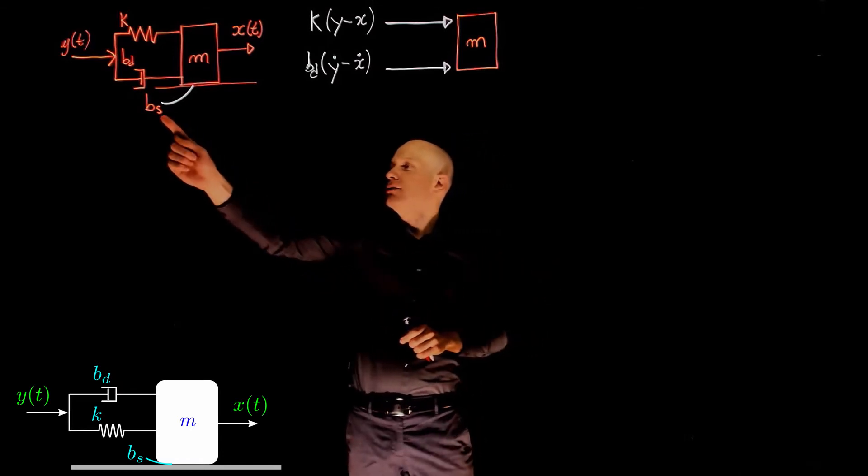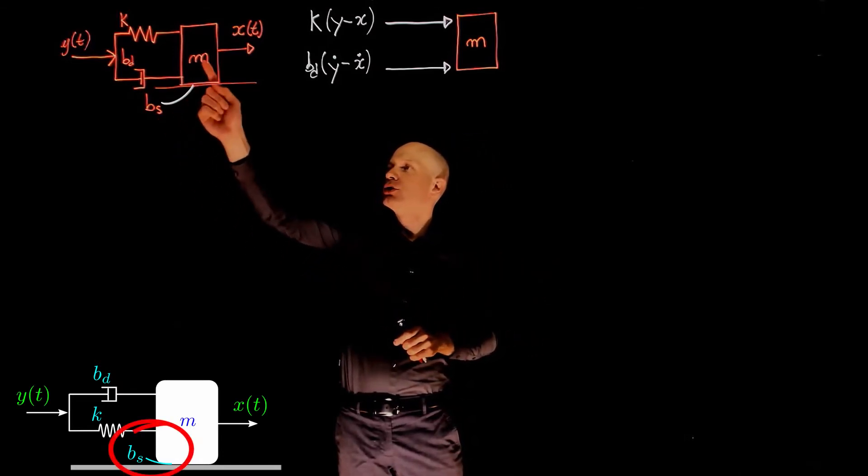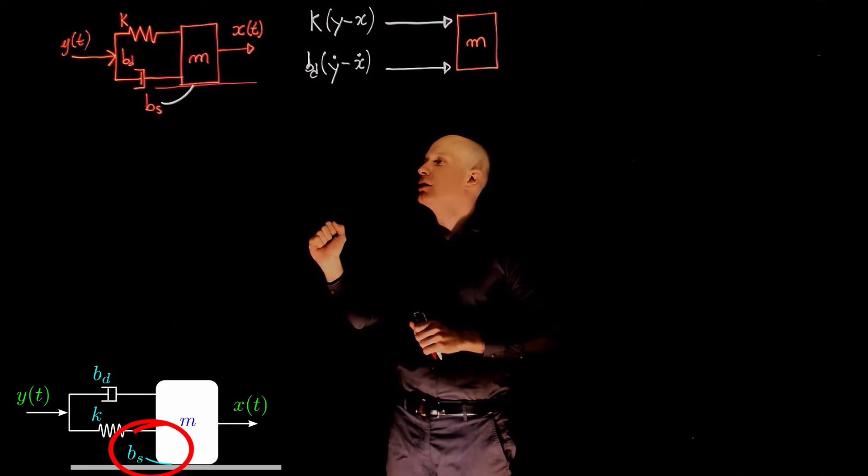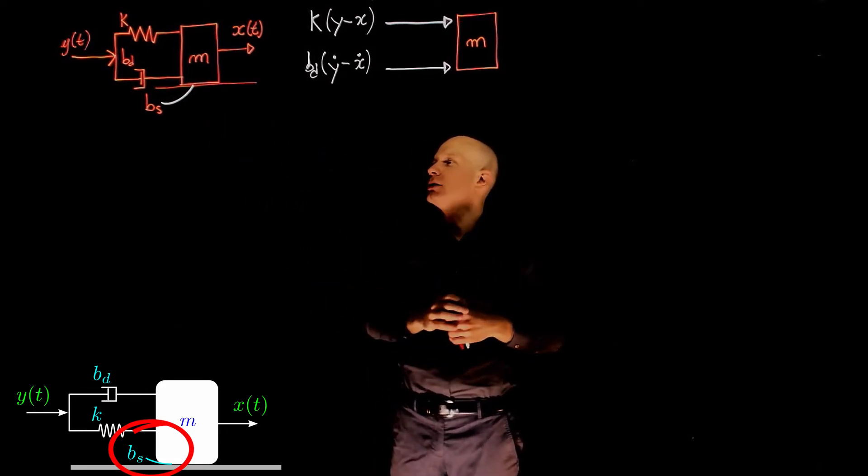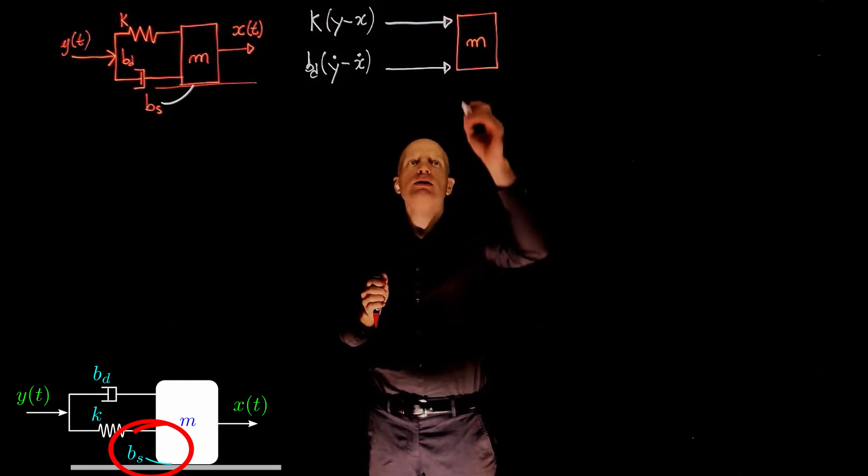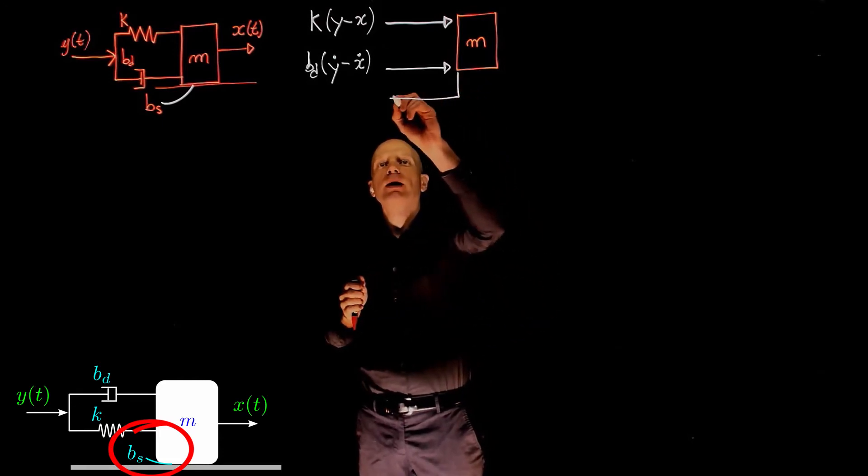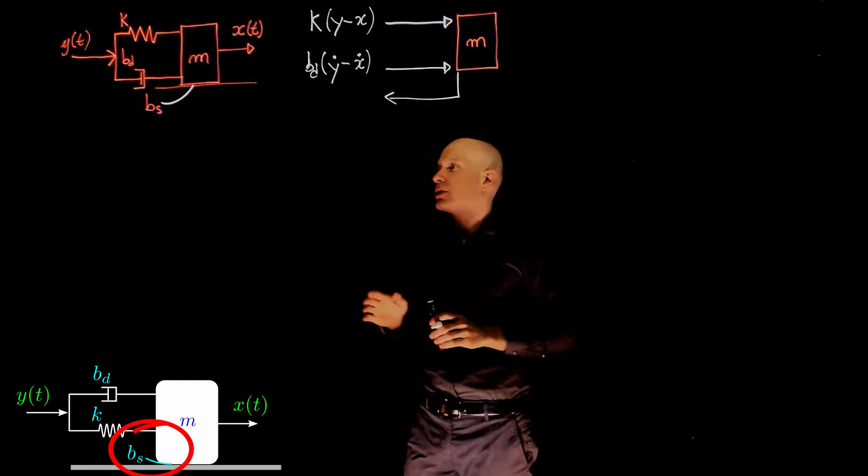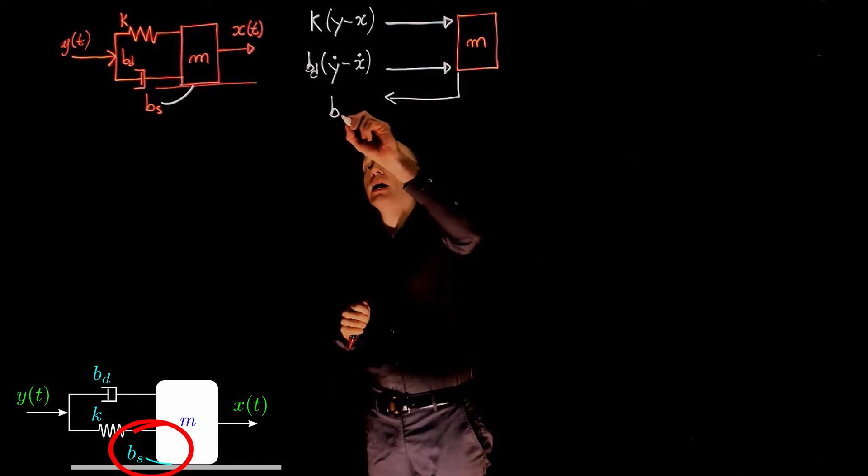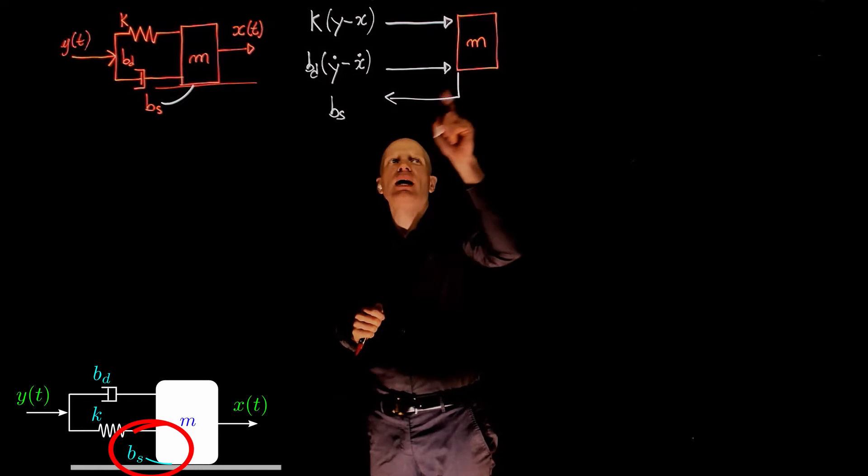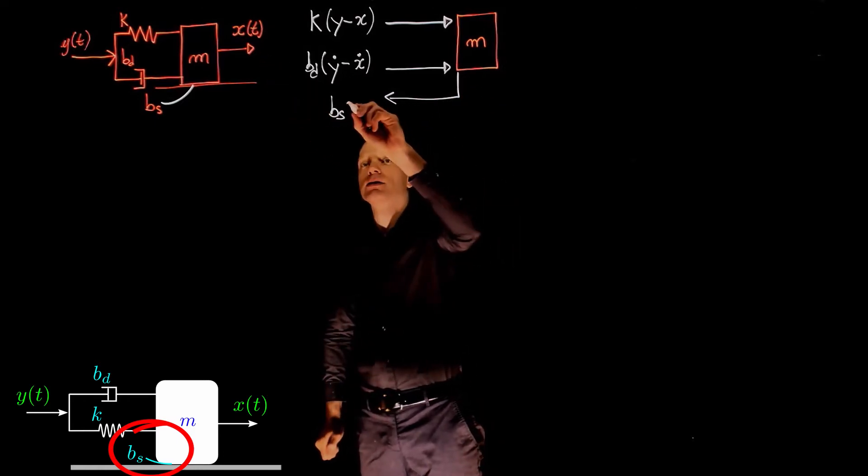And this friction here, the coefficient of viscous friction between the mass and the plane, will slow down the mass. As the mass moves to the right, that force will be applied to the left because it goes against motion. The magnitude of the force is Vs, the coefficient of viscous friction, times the speed of the mass, x dot.